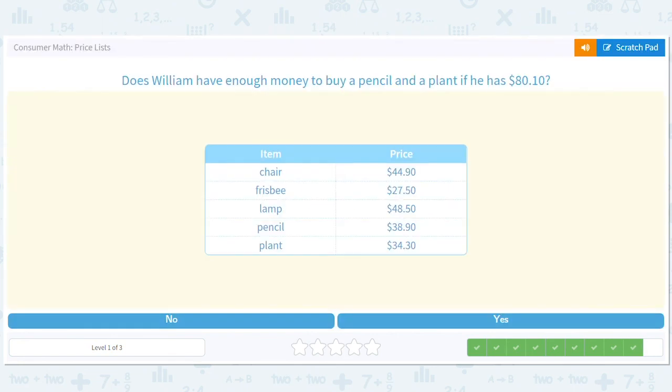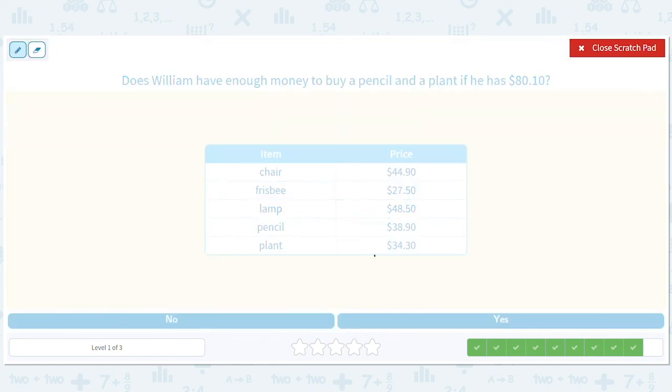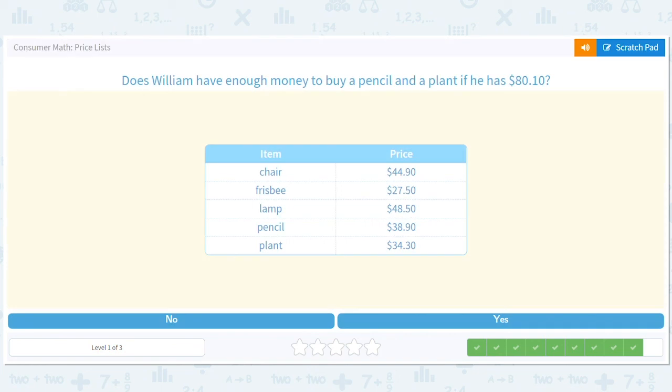Does William have enough money to buy a pencil and a plant if he has $80.10? We've got a pencil and a plant. And again, we can play that rounding game where even if we're careful, we say it's going to take $40 and the plant's going to take $40, it's still going to only take $80. We know it's actually going to take much less than that, but he has $80.10. So he definitely has enough to buy a plant and a pencil. Yes.